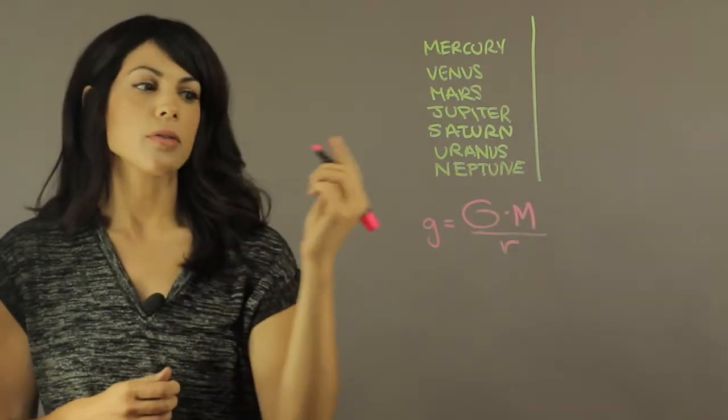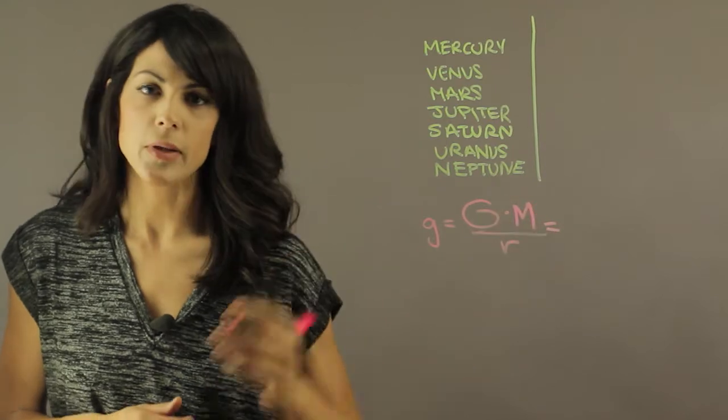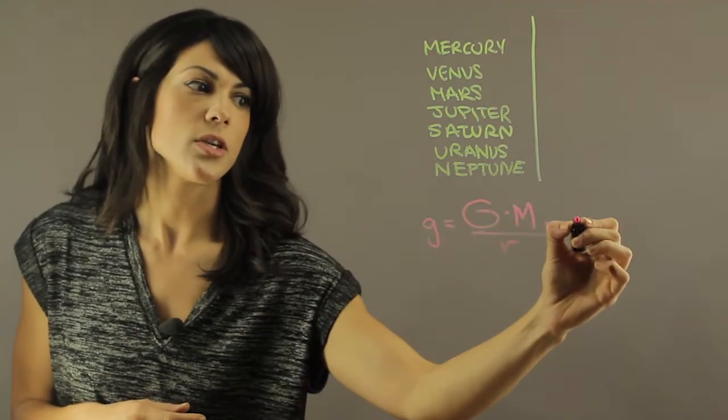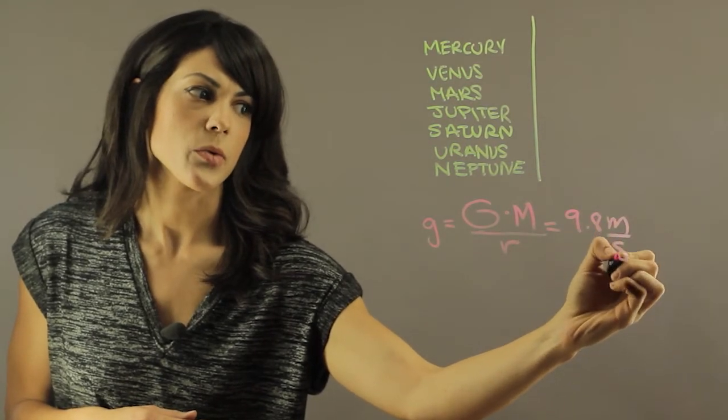Now on Earth, if you plug in the constant values, you get that g is equal to 9.8 meters per second squared.